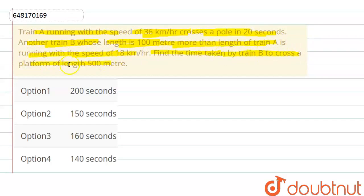Train B to cross a platform of length 500 meters. So, train A has speed 36 km per hour. Converting to meter per second: 36 into 5 by 18. So, it's a value of 10 meter per second.